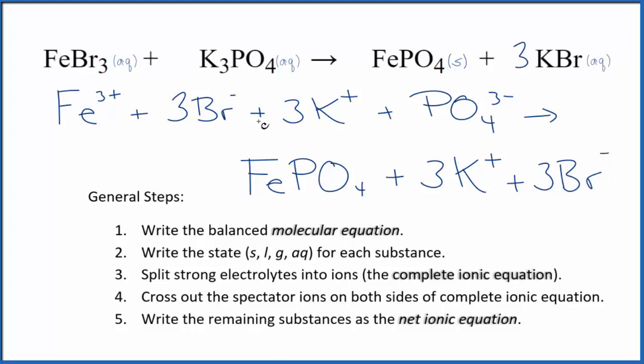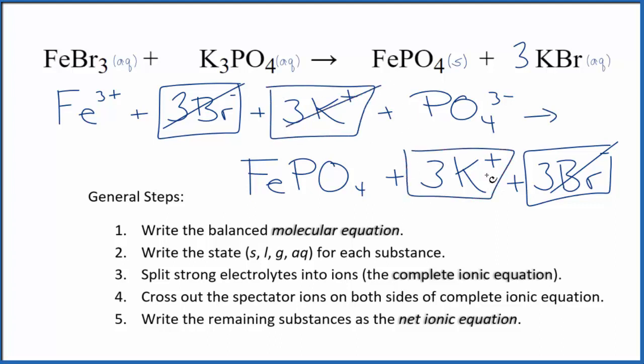So this is the complete ionic equation, and now we can cross out those spectator ions. They're on both sides. In the reactants on the top here, three bromide ions, and in the products spectator ions, we can cross those out. We also in the reactants have three potassium ions, and again in the product spectator ions, we cross them out.